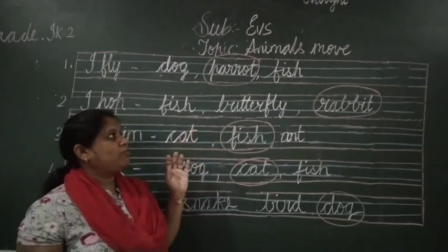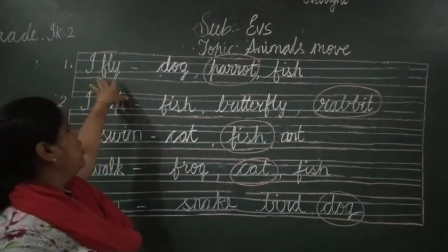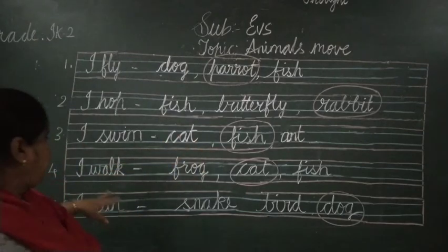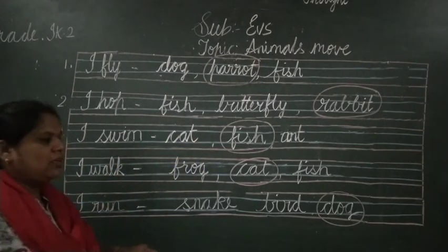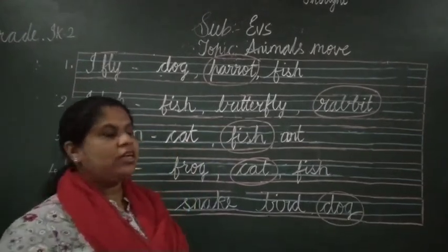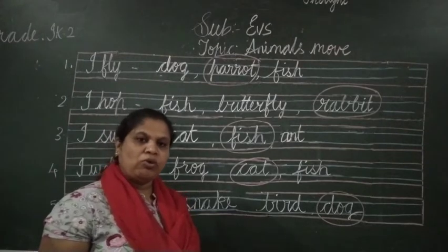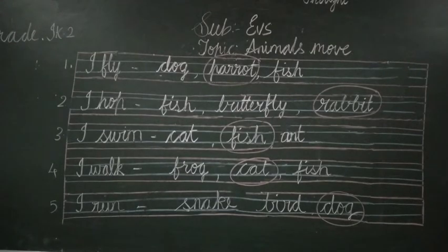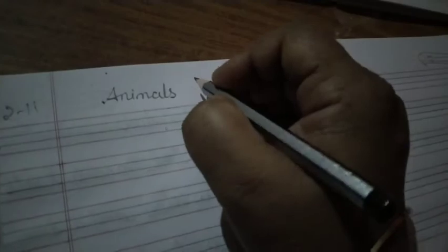So today in this class I have taught you animals move - how the animals move. Parrot flies, rabbit hops, fish swims, cat walks, dog runs. You have to circle the animal that does that movement. Now I will show you how to write in your classwork. Okay children, open your classwork - EVS classwork. Write the date: 2-11. We are going to write the topic: animals move.